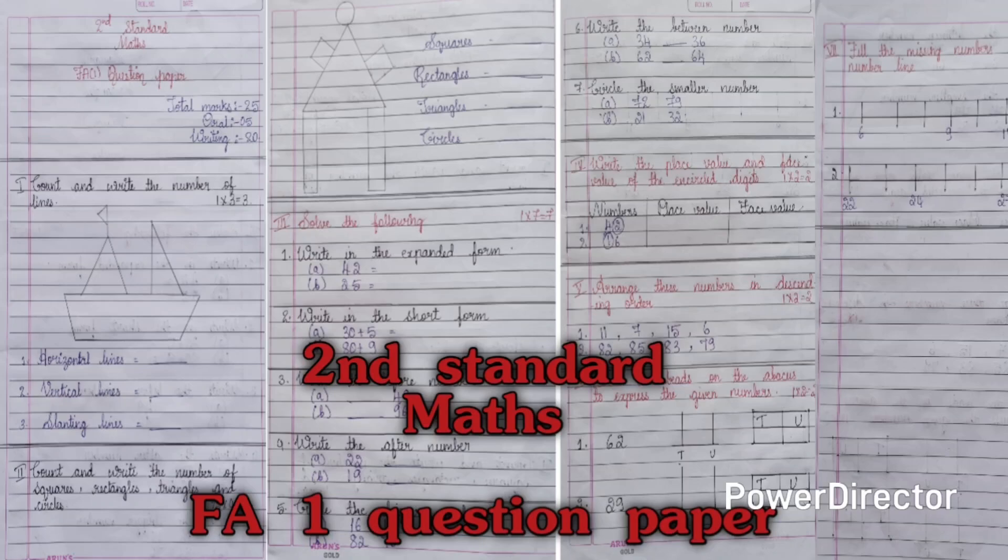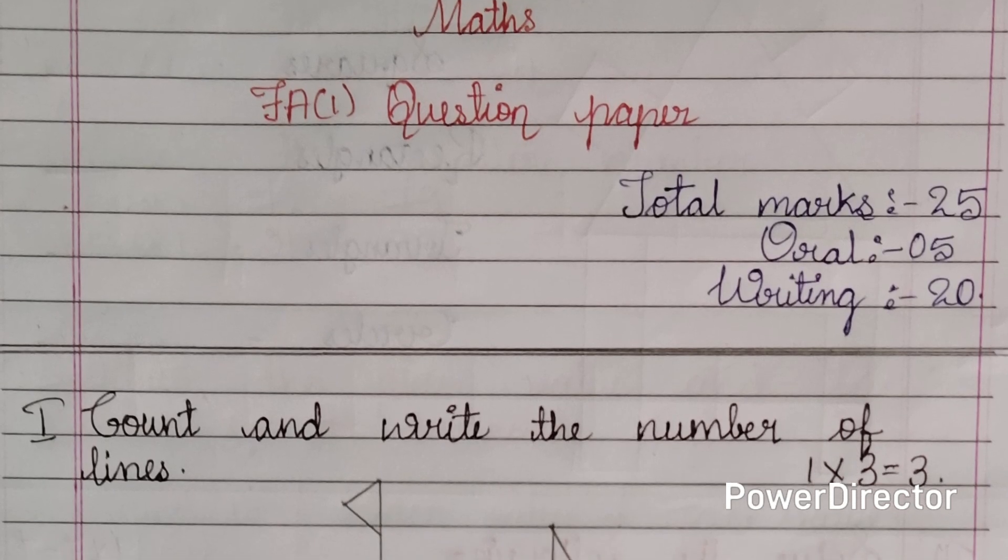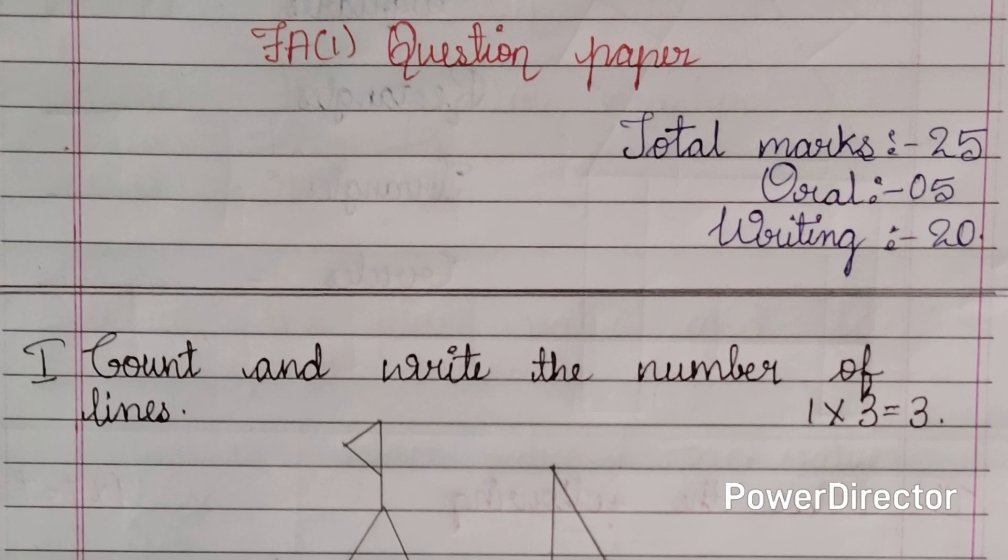Hello everyone, welcome back. Here I have second standard maths FA1 question paper. Total marks is for 25 marks, in that oral will be of 5 marks and writing will be of 20 marks.